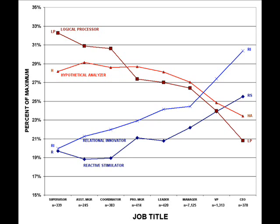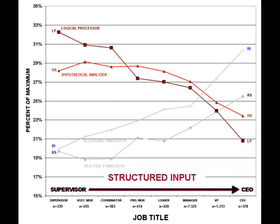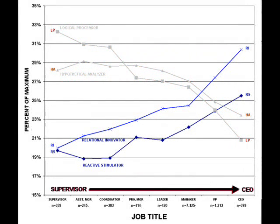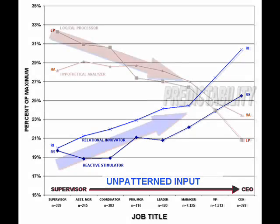Here is a picture of the IOP style strength for each title. A glance is enough to suggest that something is going on. The methodical action-oriented logical processor and the analytical-hypothetical analyzer styles fall in strength as we ascend the hierarchy. The common denominator of these two styles is structured input — both styles use some kind of template, plan, or scheme to navigate life. While the LP and HA styles fall, the idea-oriented RI and instant-action RS styles rise. The common element of these two rising IOP styles is unpatterned input. People employing unpatterned styles navigate life using an opportunistic rather than a disciplined strategy.